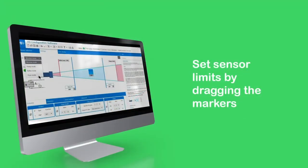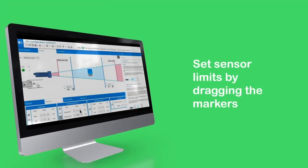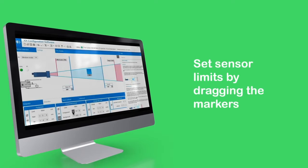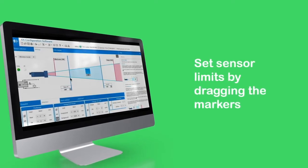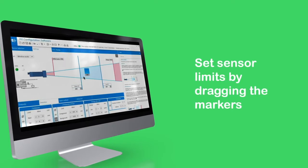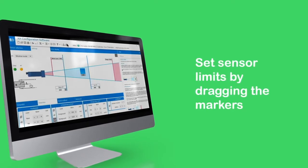Adjust your output and detection settings, then set your sensor's limits by dragging the markers on screen. When satisfied, download the settings to your sensor.